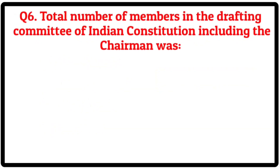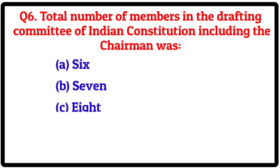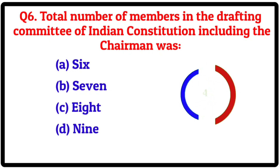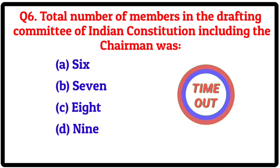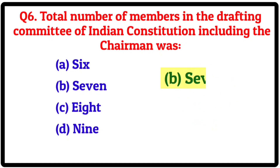Question 6. Total number of members in the Drafting Committee of the Indian Constitution including the Chairman was — Option A: Six. B: Seven. C: Eight. D: Nine. Correct answer is B: Seven.